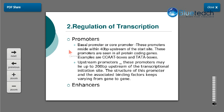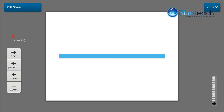Basal promoters reside within 40 base pairs upstream of the start site and are seen in all protein-coding genes — examples include CAT boxes and TATA boxes. Upstream promoters may lie up to 200 base pairs upstream of the transcriptional initiation site, and their structure and associated binding factors vary from gene to gene. The mechanism of enhancer control is similar to a safe in a bank with a series of locks — a perfect combination between promoters, transcription factors, and enhancers regulates whether the desired gene gets transcribed or suppressed.